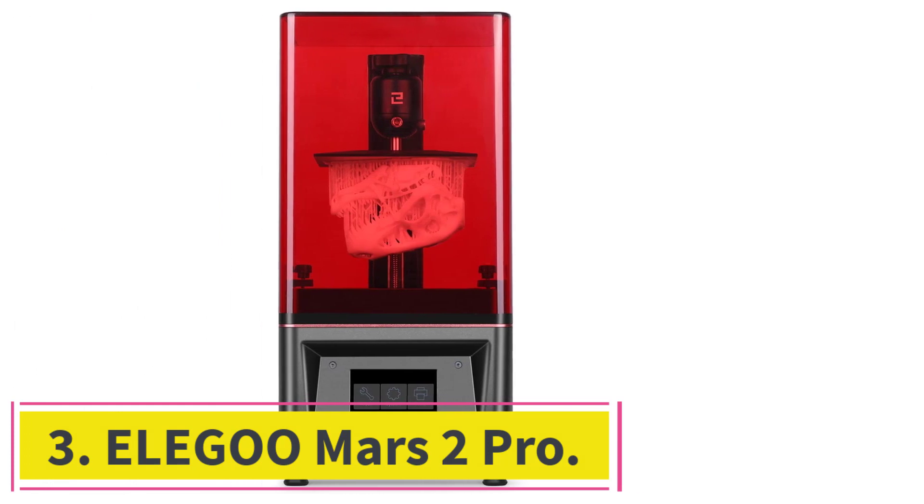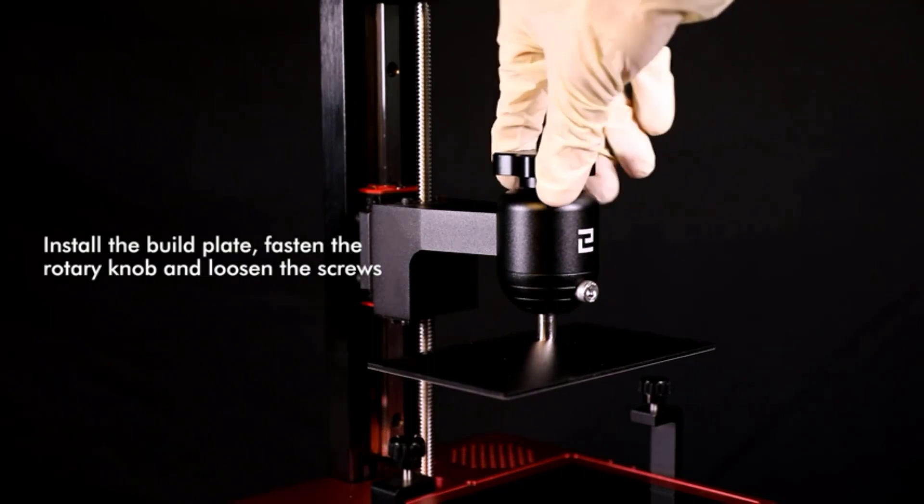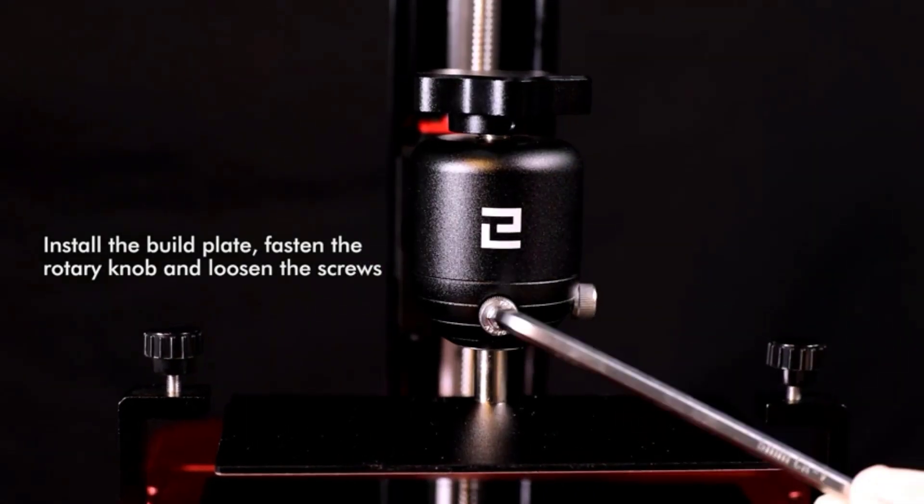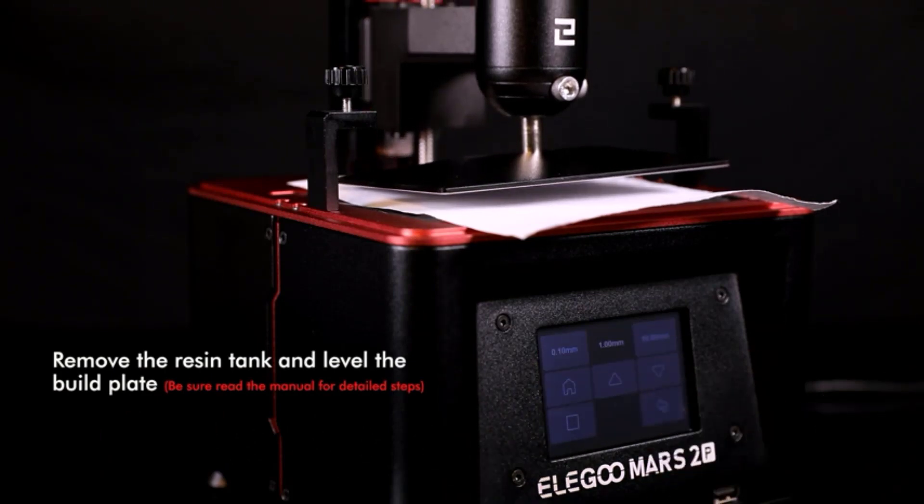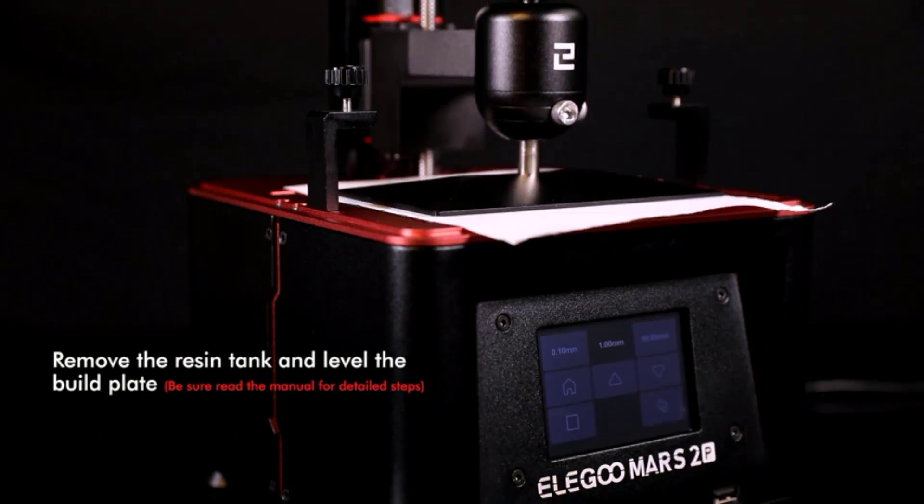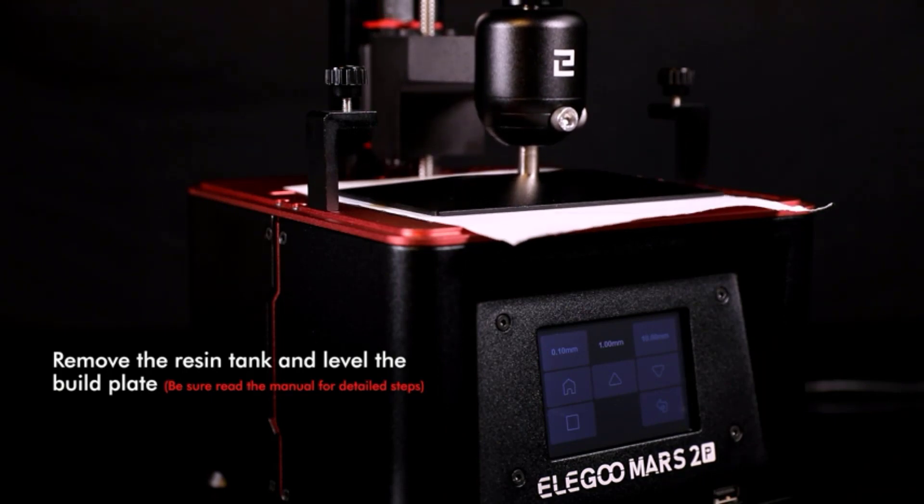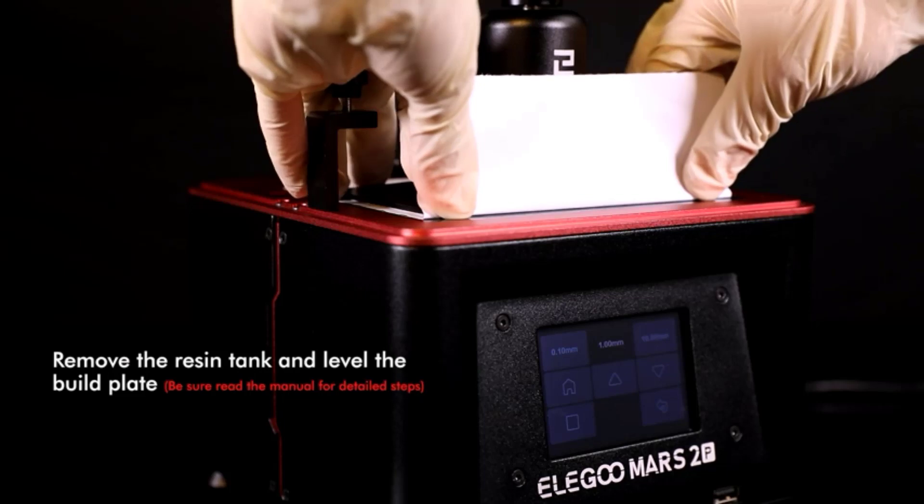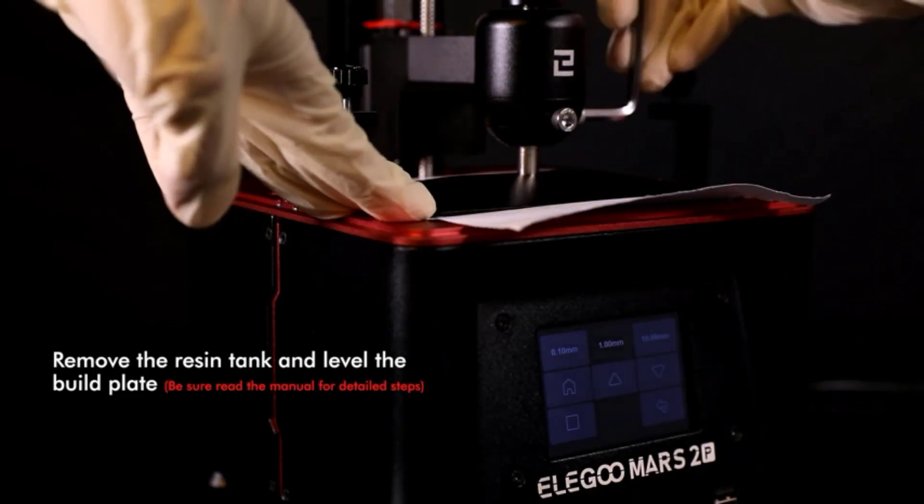At number 3, Elegoo Mars 2 Pro. The Mars 2 Pro is a surprisingly affordable 3D printer that can print amazing figures at a criminally low price. The Mars 2 makes prints with fine details. The resolution is 0.05mm for the X-Y axis and 0.00125mm for the Z-axis, as compared to Tronxi's 0.1mm resolution. This means the print quality is excellent.